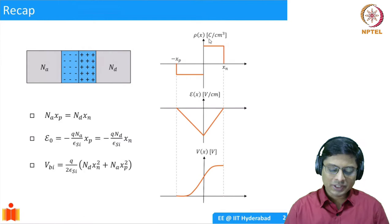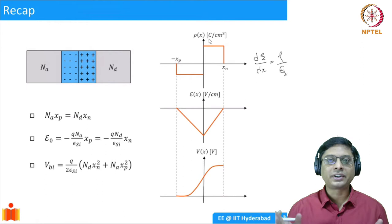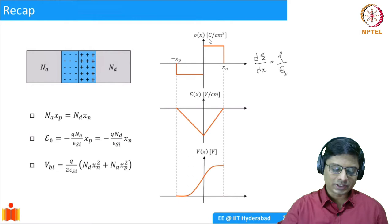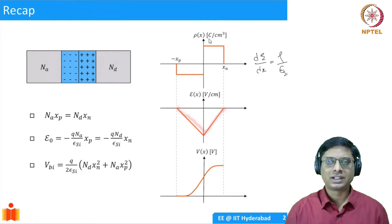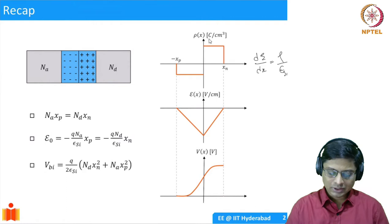Based on that charge, we applied Gauss's law: dE/dx equals rho over epsilon-silicon. We solved for it and said the electric field has to be a linear function. We presented various arguments and concluded that the electric field has to be in the negative direction, showing a triangular profile. The potential is simply the integral of the electric field, so the potential should be a quadratic form.